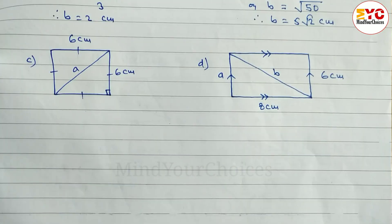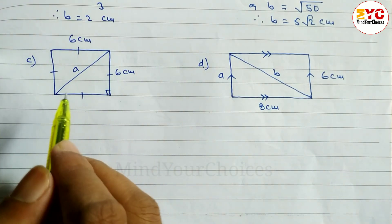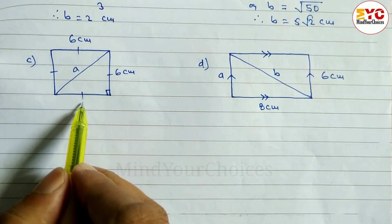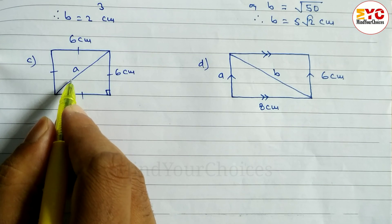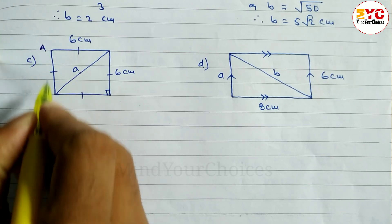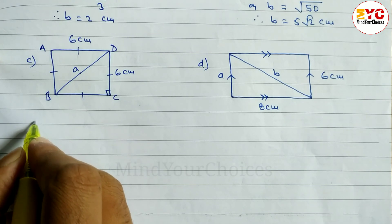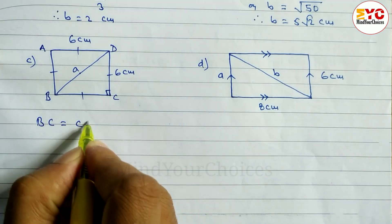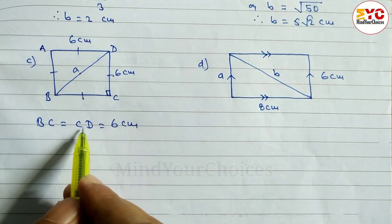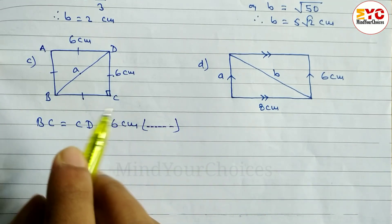Now look at question c — we have to do this in the same process as question b. This is a square. We have to find the value of a. If one side is 6, then the other side is also 6. We can write BC is equal to CD is equal to 6 centimeters, because ABCD is a square.